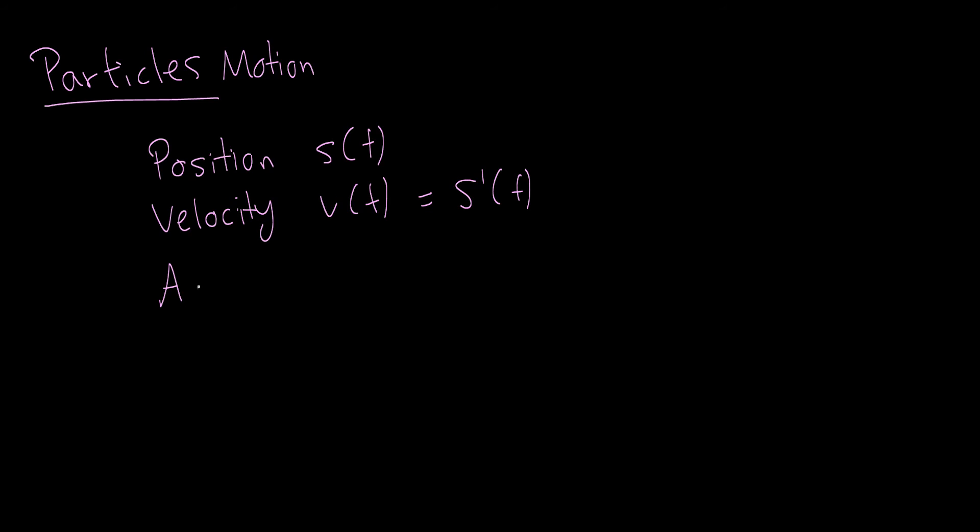And this is equal to the derivative of our position function. And what about the next one? Well, we can get acceleration, a of t, by taking the derivative of the velocity function, which is the second derivative of the position function. And if we go one step further, we can get the jerk function, which we'll call j of t. And of course, if we just continue on with this lovely trend of differentiating, we can go on and on and on and get some more information. But all of these functions are linked by derivatives.